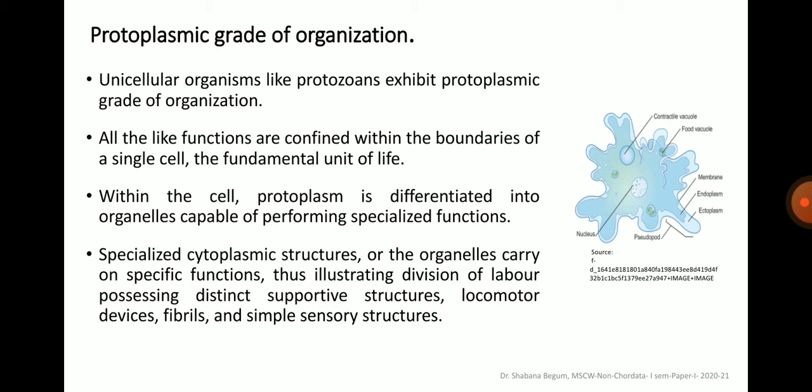What is a cell organelle? A cell organelle is a discrete subcellular structure with a particular function. The specialized cytoplasmic structures or organelles carry out specific functions, thus illustrating division of labor — possessing distinct supportive structures, locomotor devices, fibrils, and simple sensory structures. For example, Amoeba, the simplest protozoan, has a single cell in its body with contractile vacuoles for osmoregulation, food vacuoles for nutritive function, and the nucleus for reproductive function.